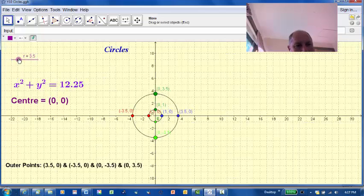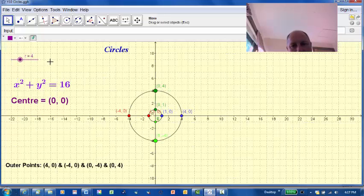And the next one we will do is make r as 4. It makes the equation x squared plus y squared equals 16. And the 4 outer points will involve 4 and 0 because the center is still at 0, 0.